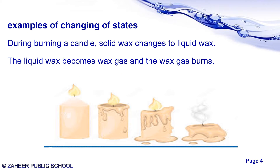Another example of changing of states is during burning a candle, where several changes take place. First, the solid wax changes into liquid wax, then the liquid wax becomes wax gas, and the wax gas burns.